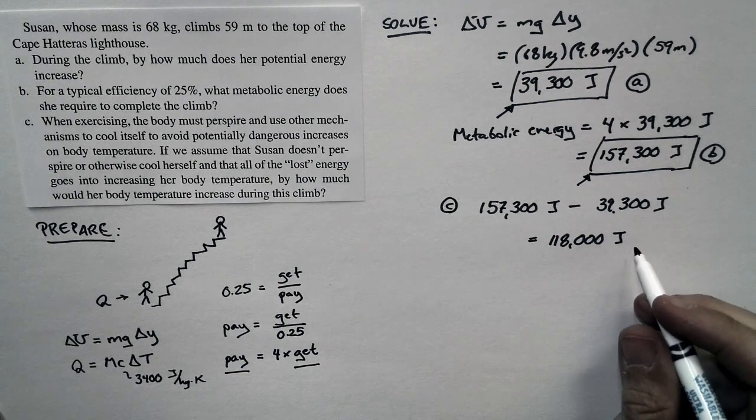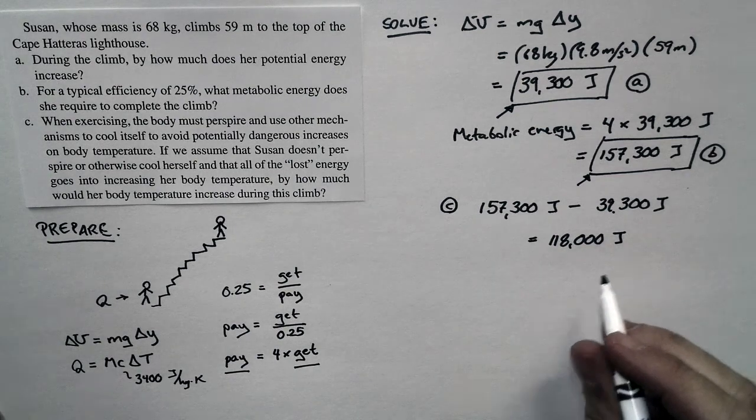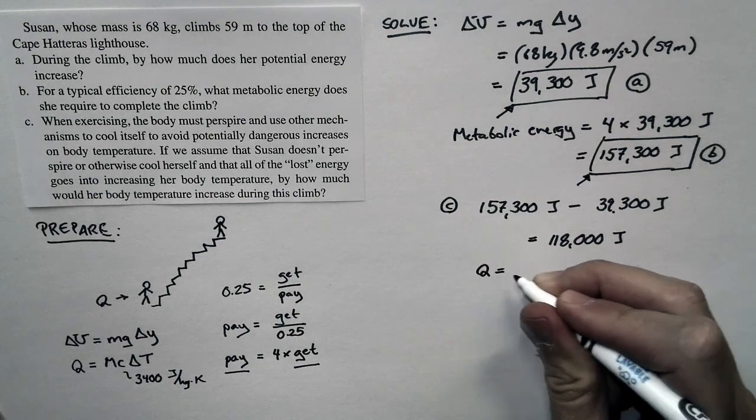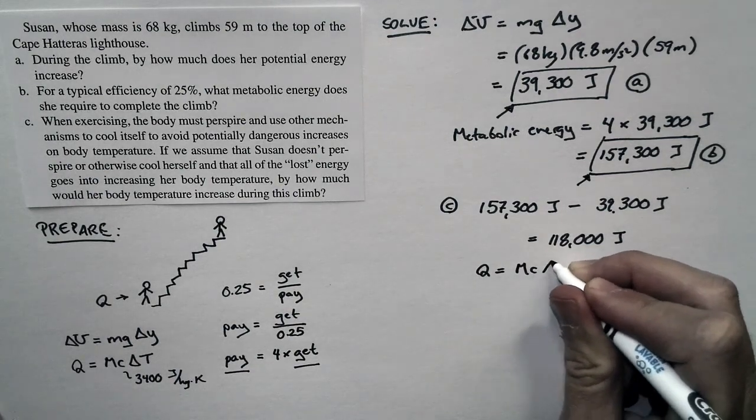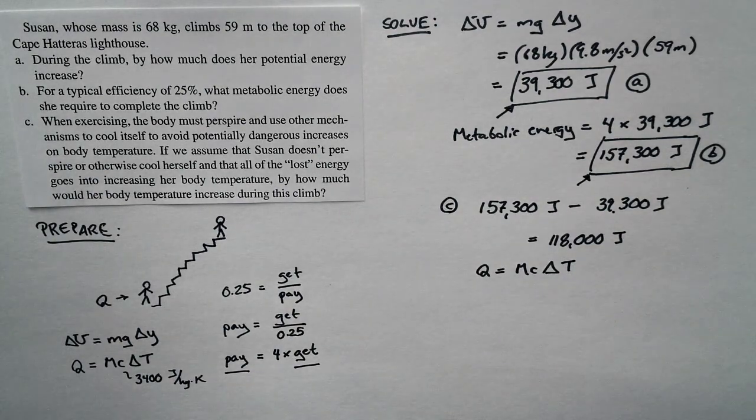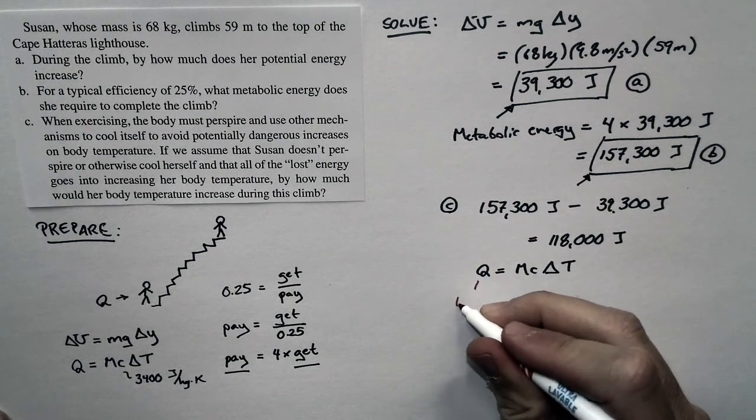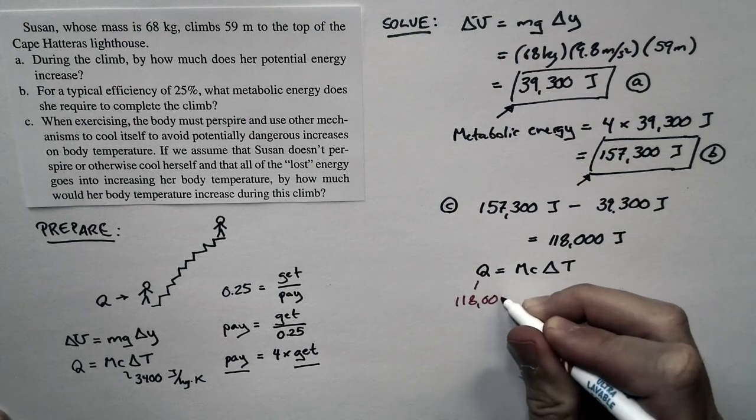This goes into warming up her body. So this number is the Q in this expression, Q equals M times C times delta T, because that's the energy that's deposited in her body. The energy deposited in her body is 118,000 joules.